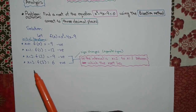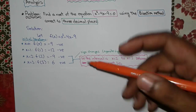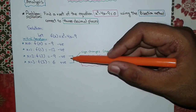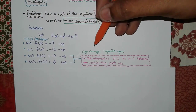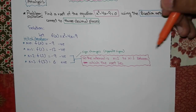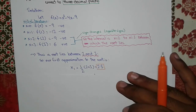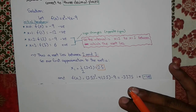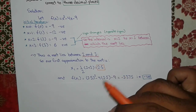When we reach x = 3, f(3) = +6, which is positive. The sign of f(x) changes between x = 2 and x = 3, so our interval in which the root lies is [2, 3]. Our first approximation to the root using the bisection method is x₁ = ½(2 + 3) = 2.5.